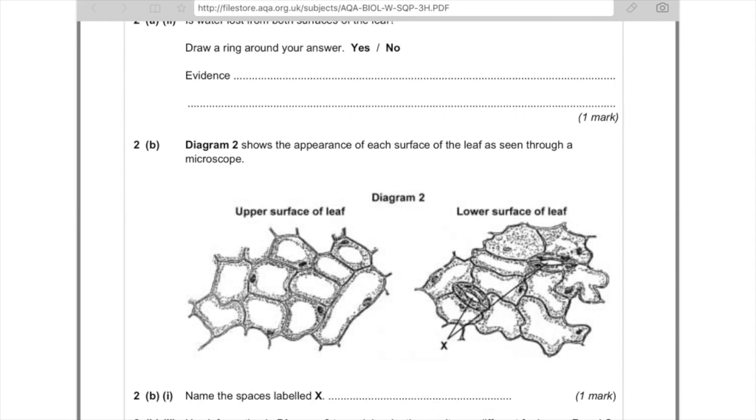Diagram 2 shows the appearance of each surface of the leaf as seen through a microscope. Name the space labeled X, so it's the hole, and that's therefore the stomata.